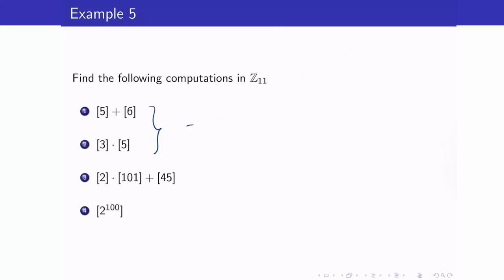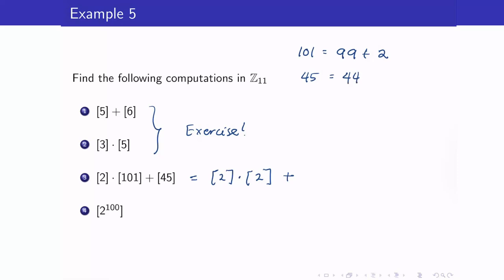I will leave the previous computation as a good exercise. For the next one in Z_11: 101 modulo 11 — the nearest multiple of 11 is 99 — so 101 ≡ 2 mod 11. The equivalence class of 45: since 45 equals 44 plus 1 and 44 is a multiple of 11, 45-bar equals 1-bar. So equivalence class of 2-bar plus 1-bar equals 5-bar in Z_11. Wait — that gives equivalence class of 4 plus 1, which is 5.